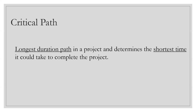First, it says the longest duration path in a project. If you have three activities in one line from start to end, each taking 10 days, that's 30 days to go through that path. If you have another stream — A, B, C, D — each taking 10 days, that's 40 days. You choose the path with the longest duration, which is the 40-day path. That is one part of the definition: the longest duration path is the critical path.